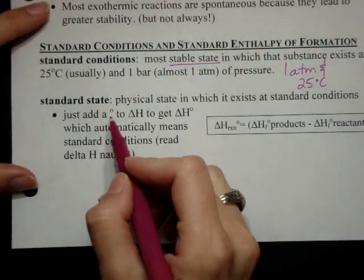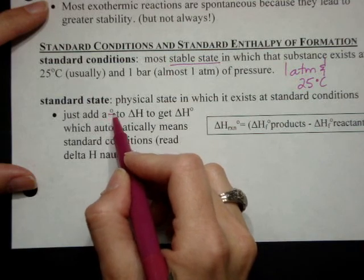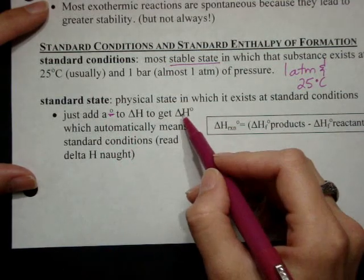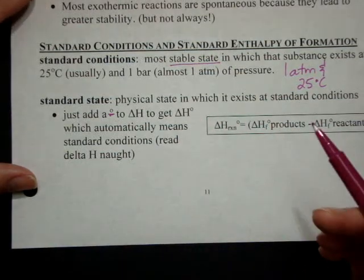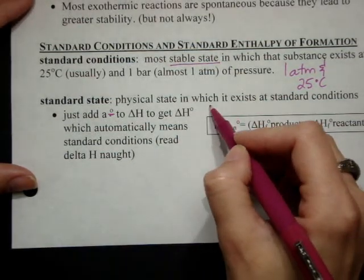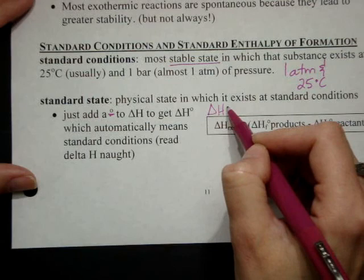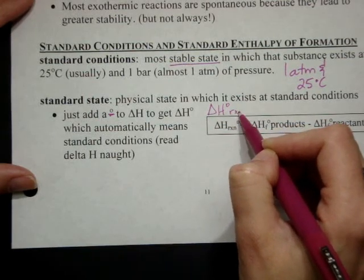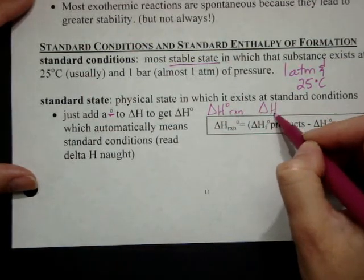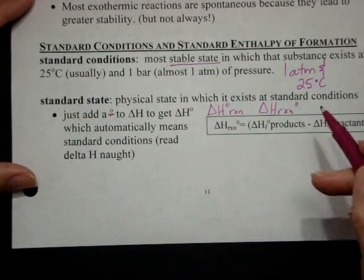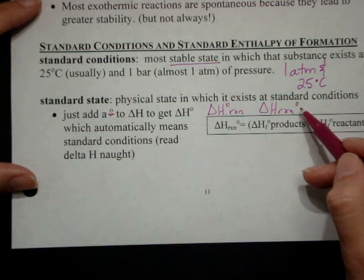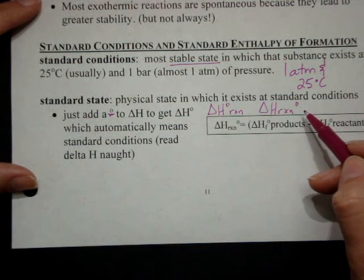Okay, so the standard state, we're going to show by using a little degree symbol, but we're going to put it on the outside of whatever we're talking about. Some people will put it, let's say for instance we're doing the delta H reaction, some people will put the not before they write the reaction, some people will write the not after the reaction. It all means the same thing and it just means that this reaction is happening at standard conditions.